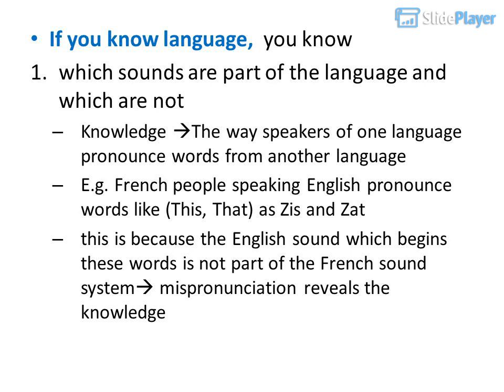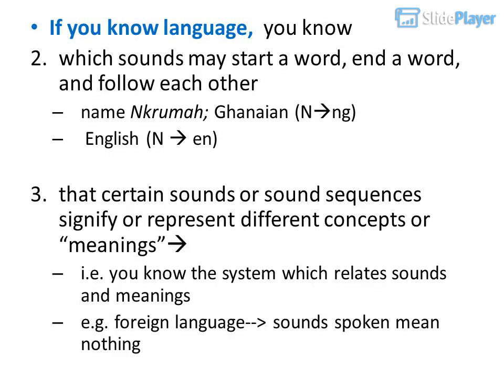You also know the way speakers of one language pronounce words from another language. For example, French people speaking English pronounce words like 'this' and 'that' as 'zees' and 'zhat.' This is because the English sound which begins these words is not part of the French sound system. Mispronunciation reveals this knowledge. You also know which sounds may start a word, end a word, and follow each other.